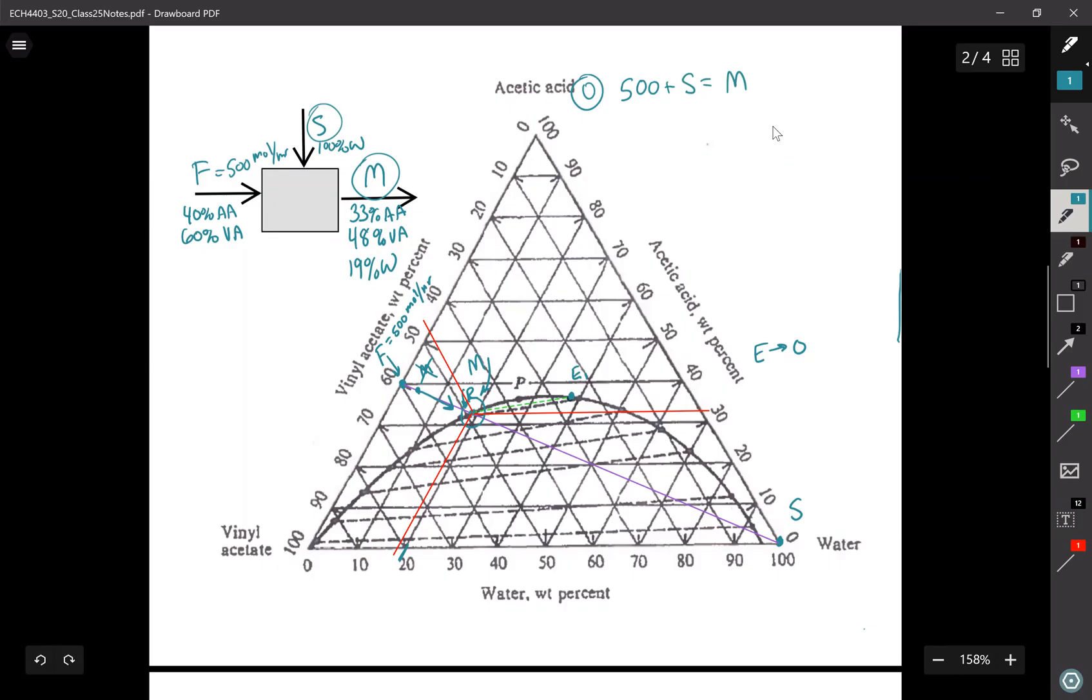I always pick the overall material balance because it's the easiest. 500 plus S equals M. And I will pick a water balance as well to solve. So I'll get S equals M times 0.19. Two equations, two unknowns. I can simply plug in for S in this case. So I can say 500 plus 0.19M equals M. And then M will be equal to 500 divided by 0.81. M equals 617 moles per hour. Meaning that S must be M minus 500 or 117 moles per hour.